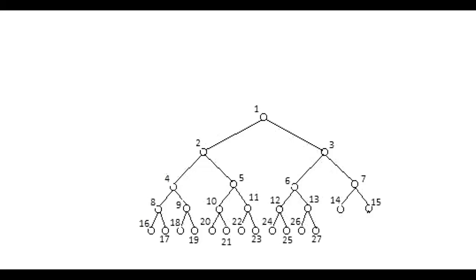A heap is going to be stored as an array. The numbers represented here are actually the indices of the array elements — position 2, position 3, and so on, up to 10 and beyond. A binary heap must be a complete tree, so the only thing that could happen is that the lowest level might not be complete, but it has to be complete from left to right. The only elements that might be missing are those to the right. Each node of this binary tree has two children.